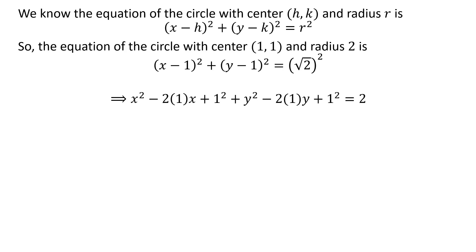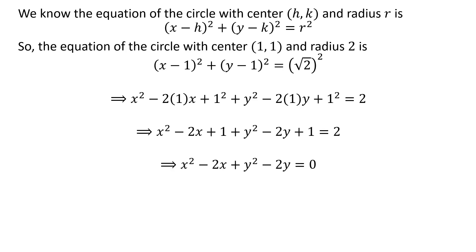Expansion of the square terms gives us x² - 2(1)(x) + 1² + y² - 2(1)(y) + 1² = 2. Further simplification gives us x² - 2x + y² - 2y = 0.